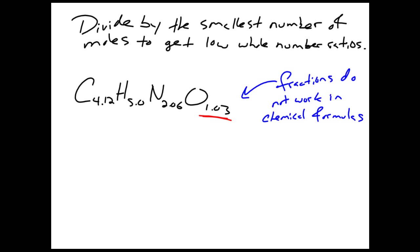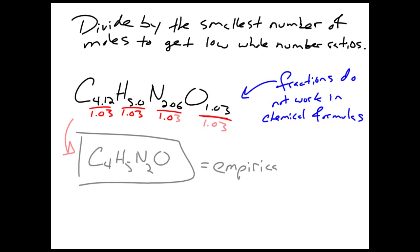In this case, the lowest value is oxygen's 1.03. We divide each subscript by that lowest number and we get ourselves whole numbers — that's our empirical formula.